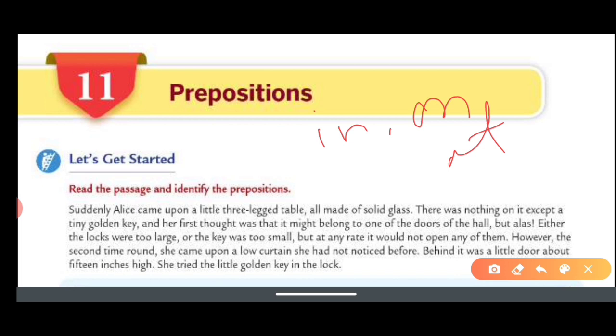Suddenly Alice came upon a little three-legged table. What is the preposition here? Upon. Next, a little table all made of solid glass. Of is your preposition. There was nothing on it except a tiny golden key, and the first thought that it might belong to one of the doors of the hall. So on, to, and of are your prepositions. But Alice, either the locks were too large.